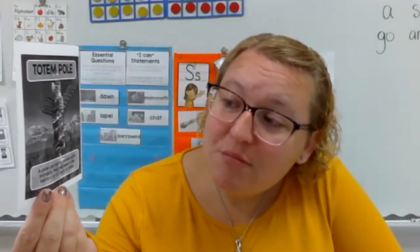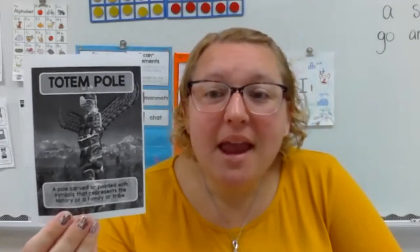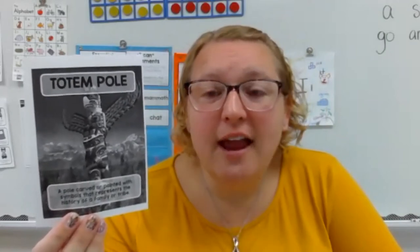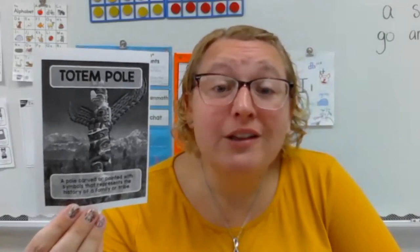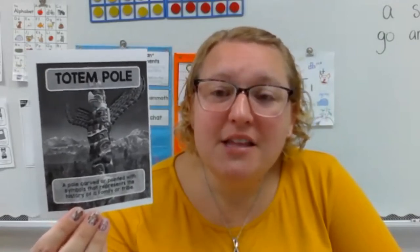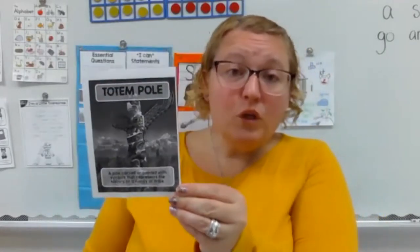This next word is really fun — look closely at this picture. This is called a totem pole. A totem pole is a pole carved or painted with symbols that represent the history of a family or tribe. A particular family may have carved a totem pole to represent things they've done in their life, or a tribe might have made a large totem pole to express the different things their tribe accomplished or encountered.